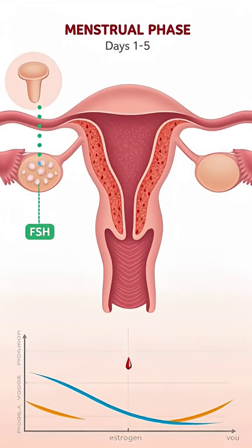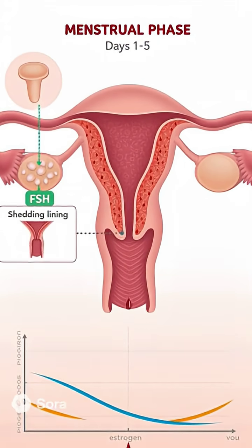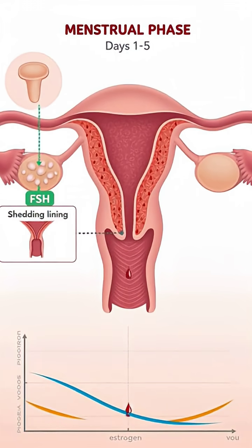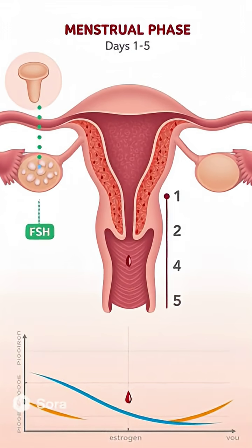The menstrual phase begins with the shedding of the endometrial lining due to a sudden drop in estrogen and progesterone levels. This results in menstrual bleeding, the visible start of the cycle. During these first few days, hormone levels are at their lowest.